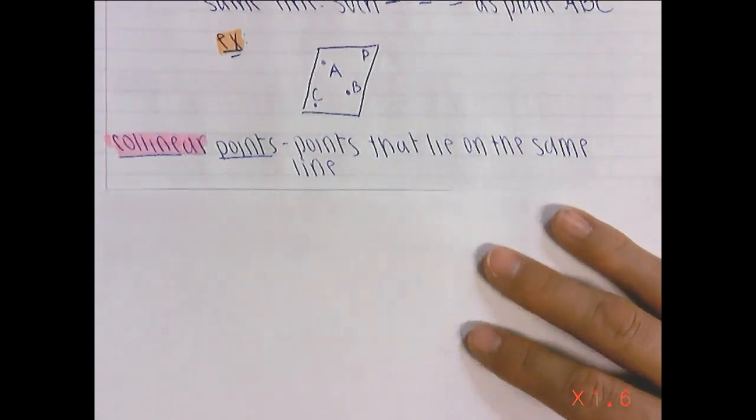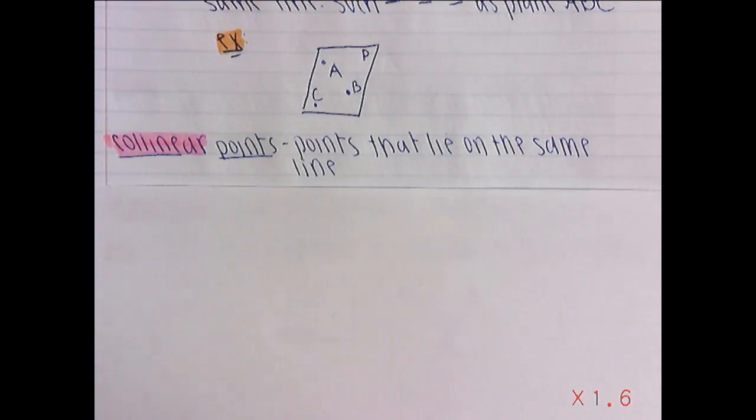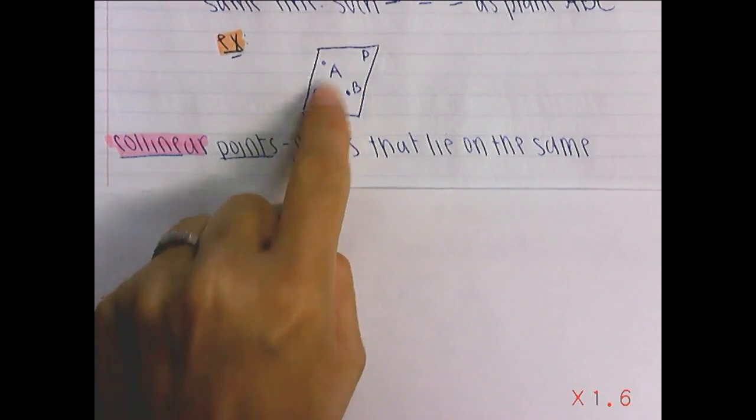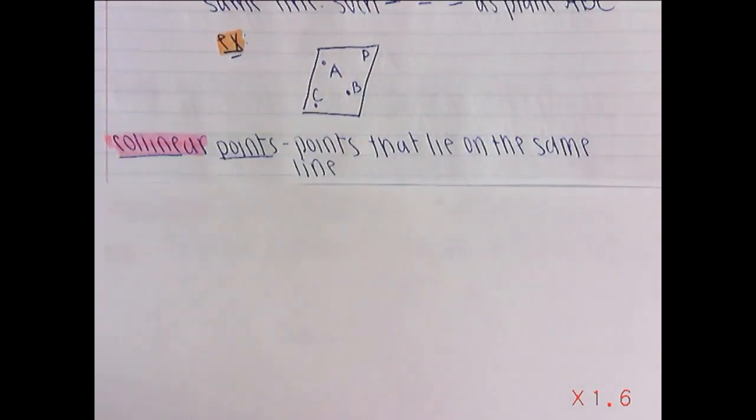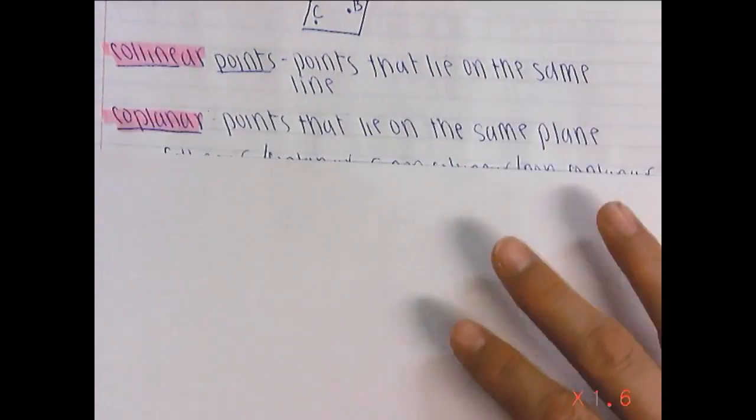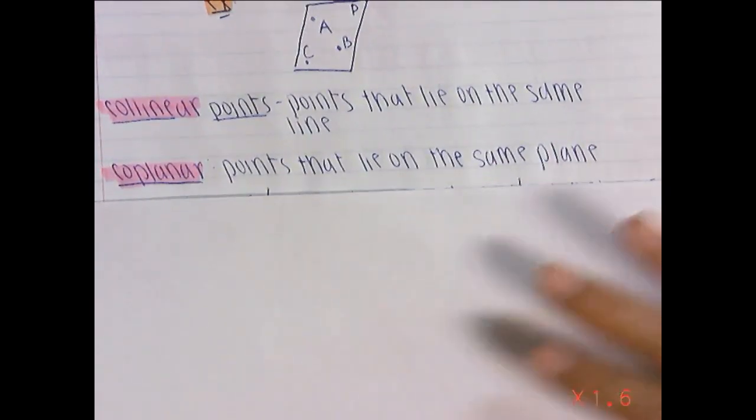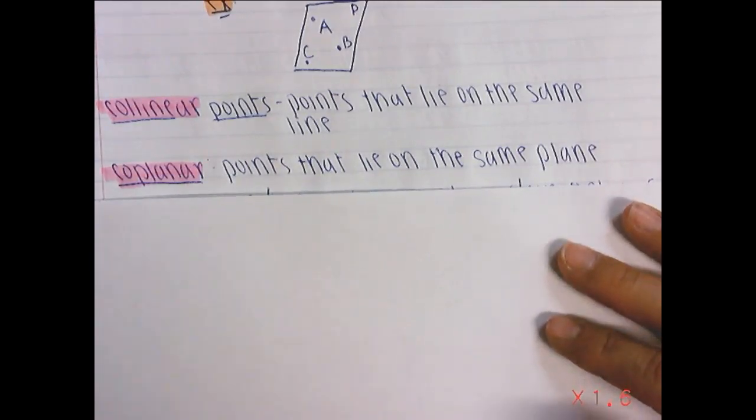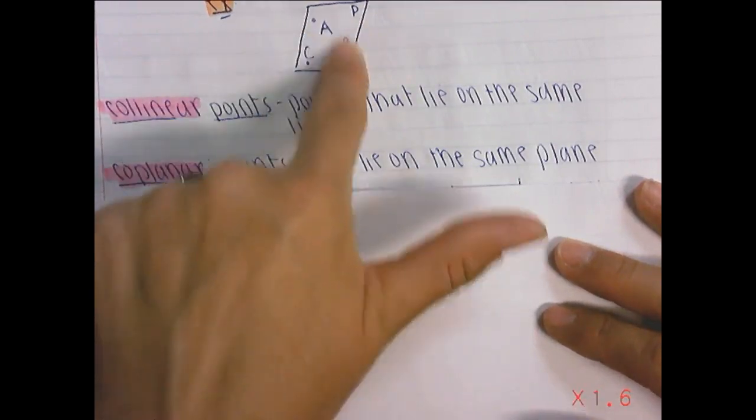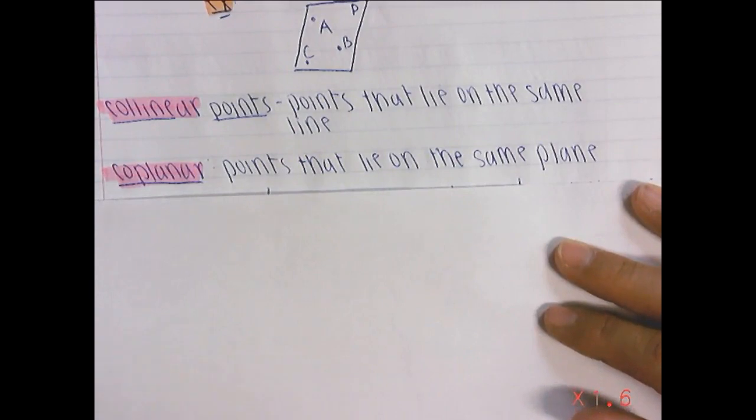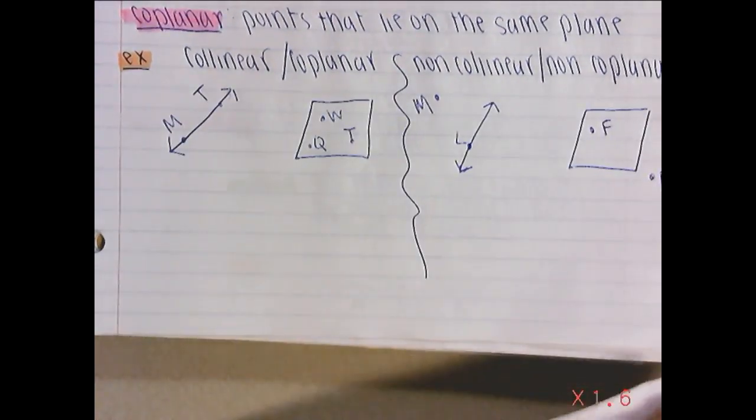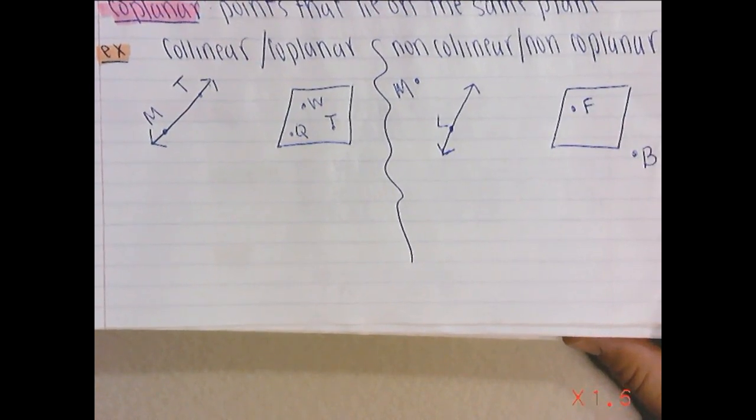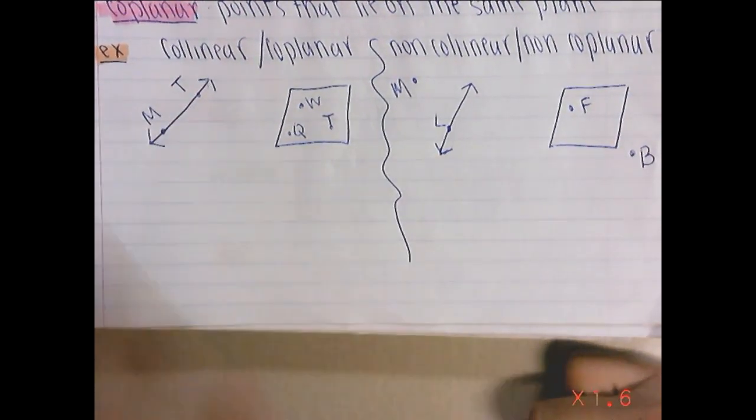The next thing we're going to talk about are collinear points. Those are two points that lie on the same line. So if we look back up here to these two points, A and C, if I were to connect them with a line, they would be collinear. And then we have coplanar. Points that lie on the same plane. So they're points lying on the same plane. Up here, A, B, and C would all be coplanar. And what I did here is I drew a little example for each of you guys, for you guys to see if you want to go ahead and copy that down. So collinear, here's two points lying on the same line. And coplanar, three points lying in the same plane.